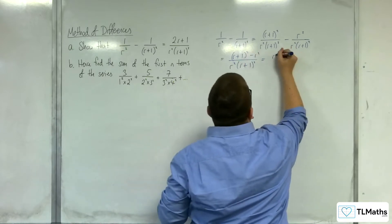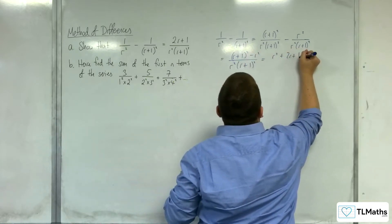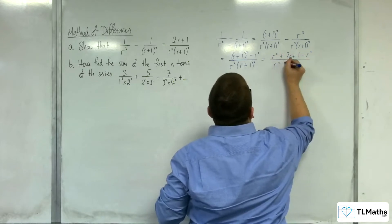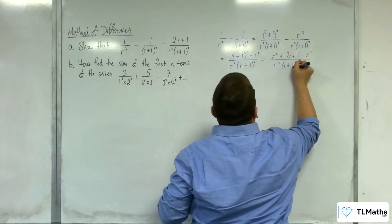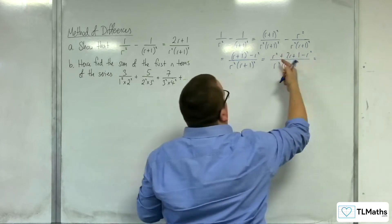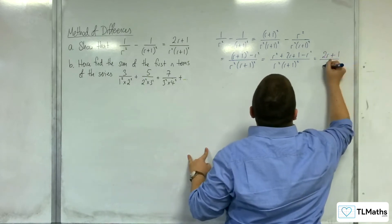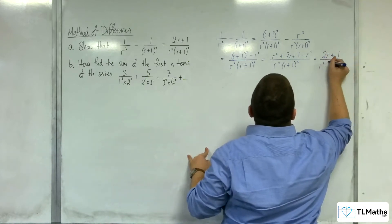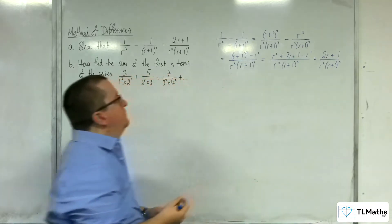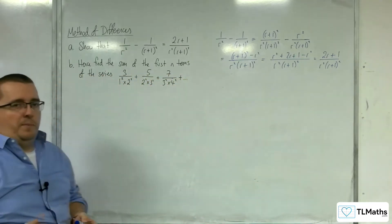Multiplying out the numerator, we get r squared plus 2r plus 1 take away r squared, over r squared times r plus 1 squared. The r squareds cancel, and so we're left with 2r plus 1 over r squared times r plus 1 squared. So that's the answer to part A.